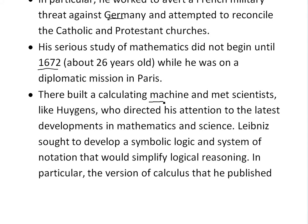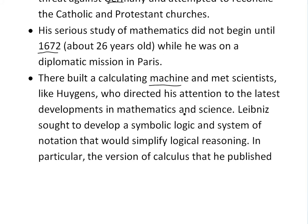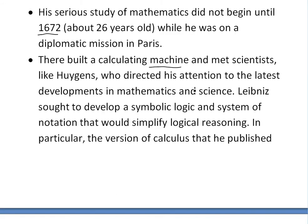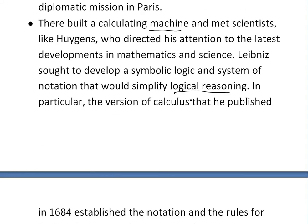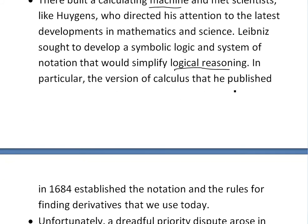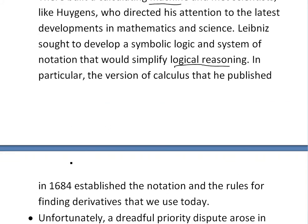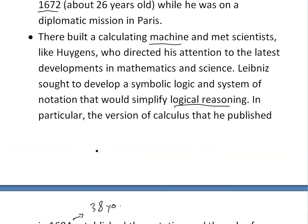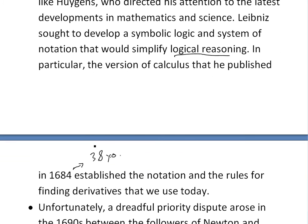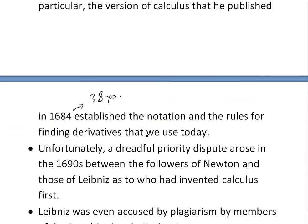In Paris, Leibniz actually built a calculating machine and met scientists like Huygens, which directed his attention to the latest developments in mathematics and science. Leibniz also sought to develop symbolic logic and a system of notation that would simplify logical reasoning. In particular, the version of calculus that he published in 1684 — when he was about 38 years old — established a notation and rules for finding derivatives that we still use today.